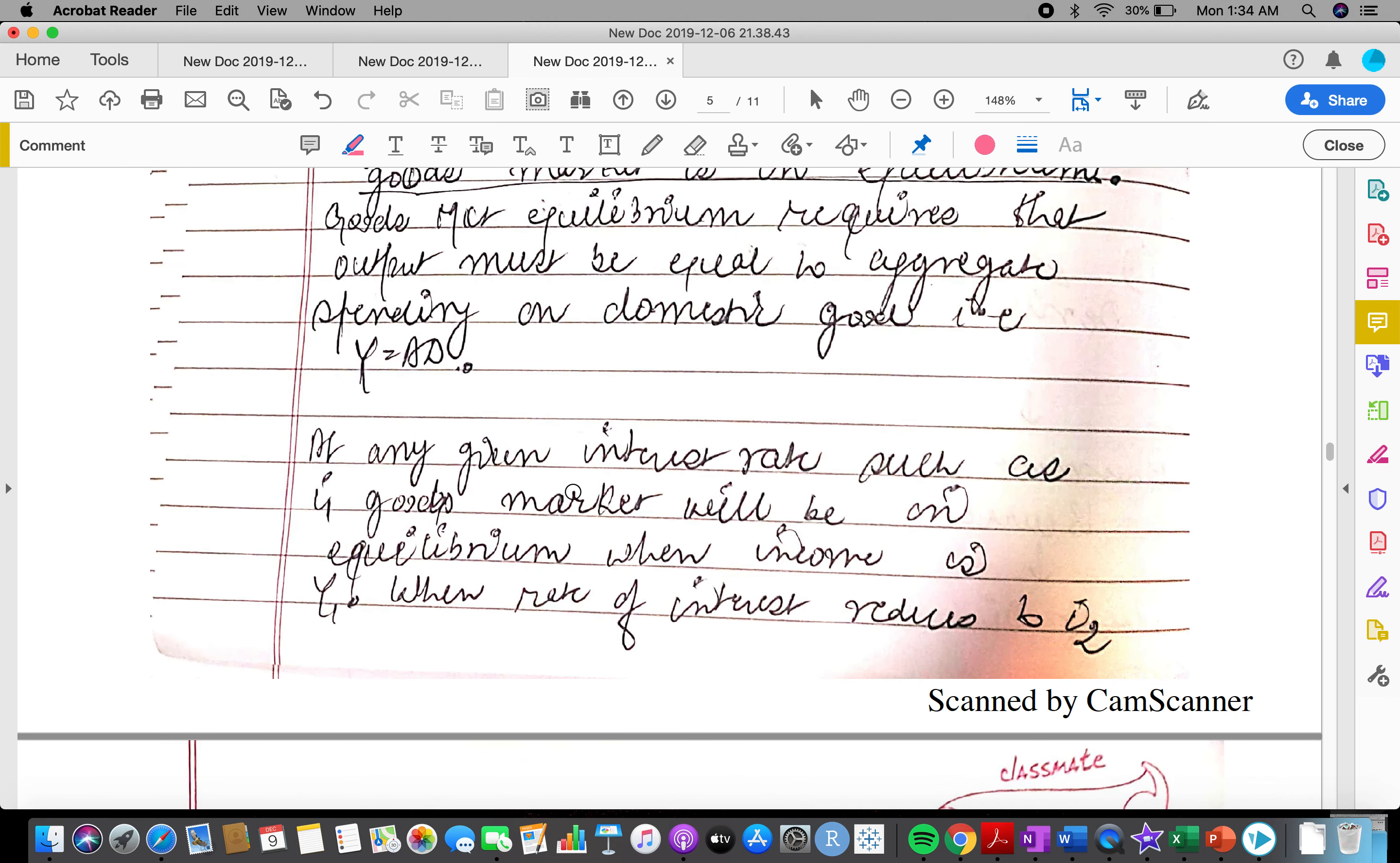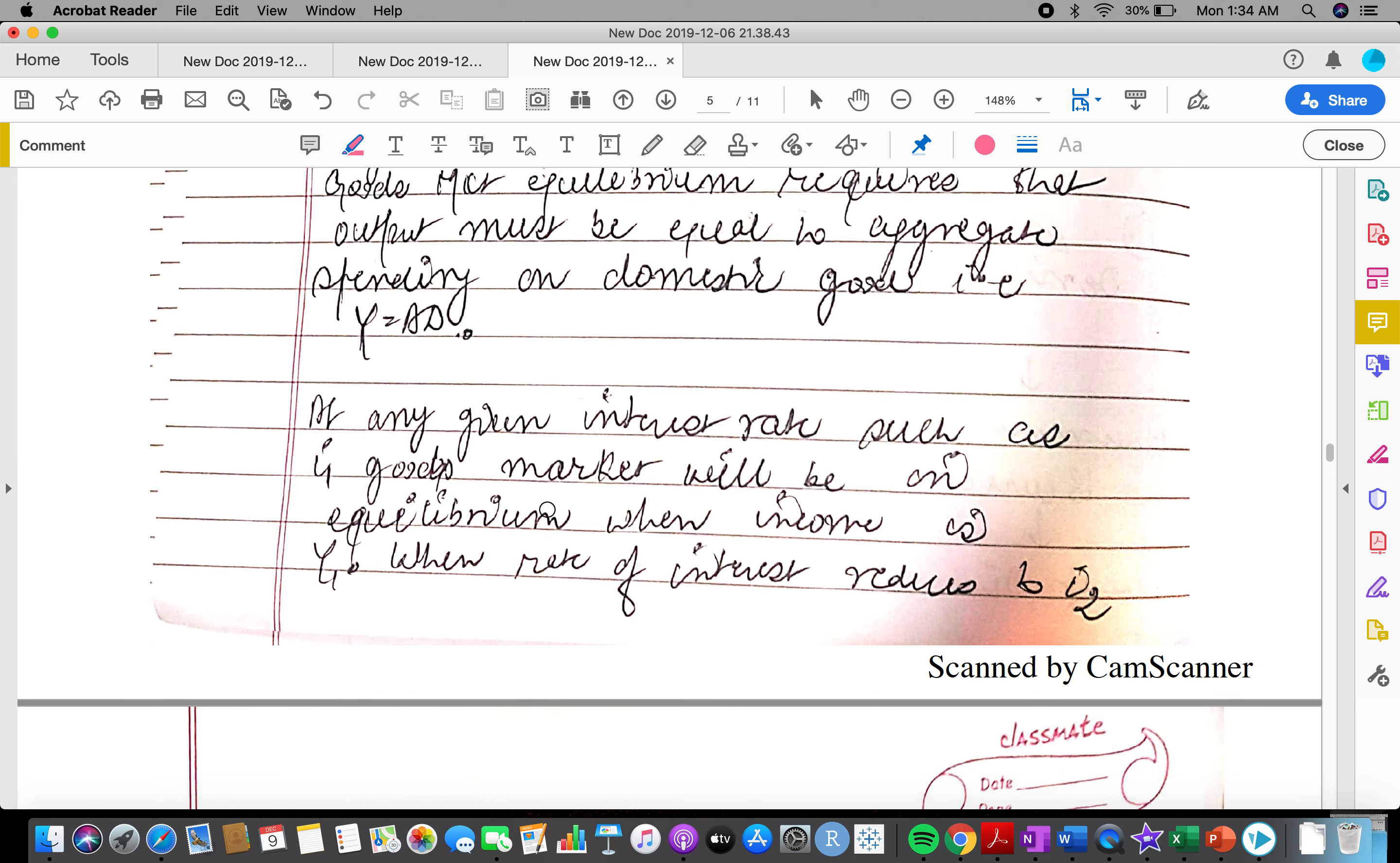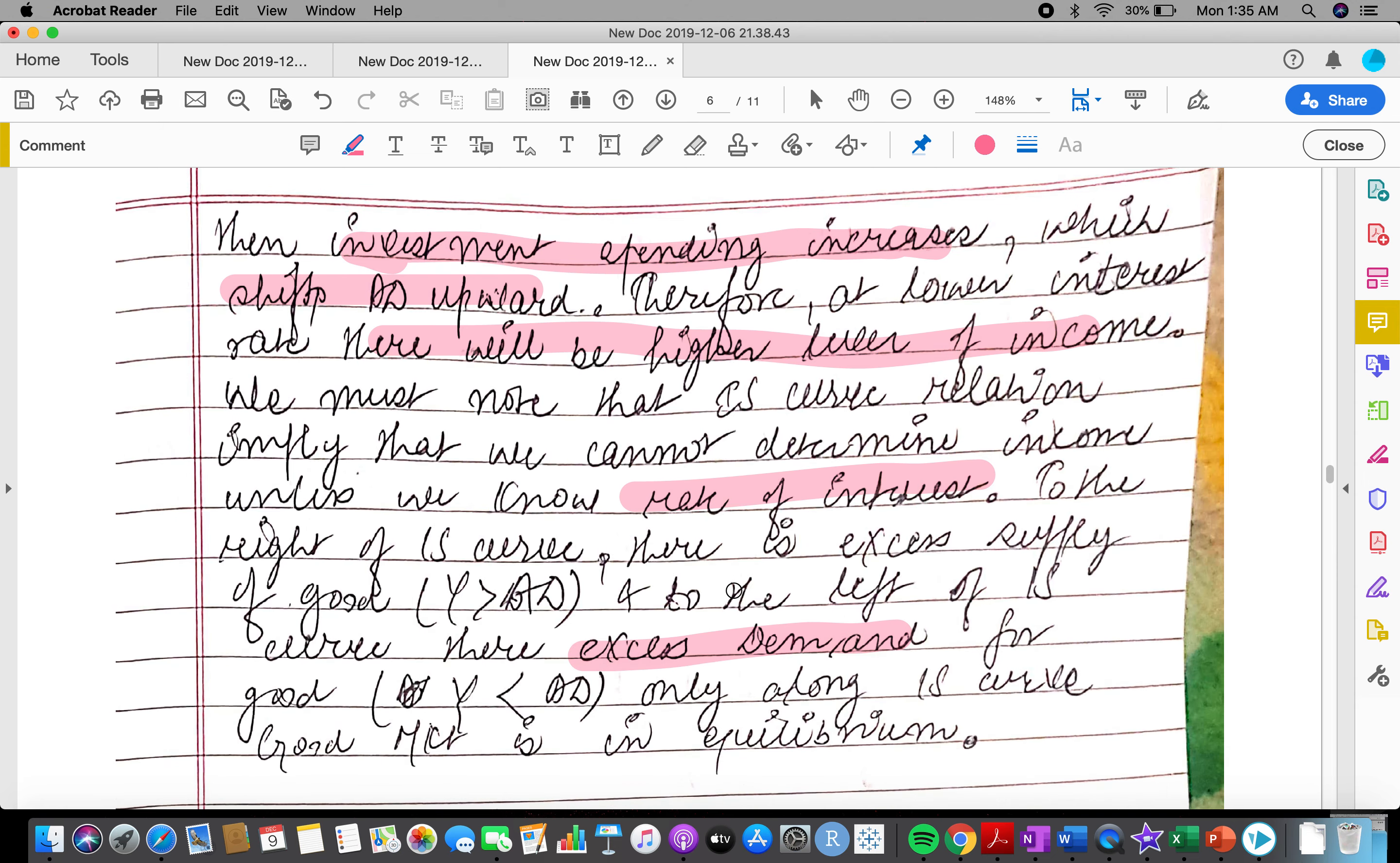At any given interest rate, such as I1, Y1 is the equilibrium income. When interest rate reduces, that means investment would increase. That would lead to shift in AD curve, and at a lower interest rate there will be higher level of income.